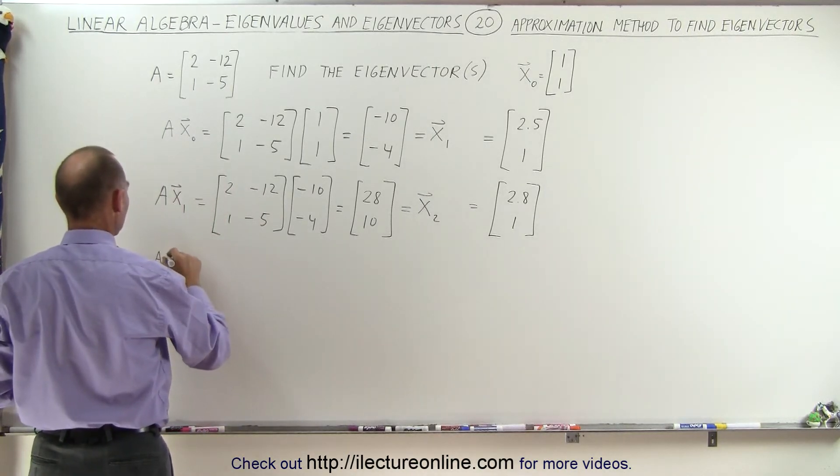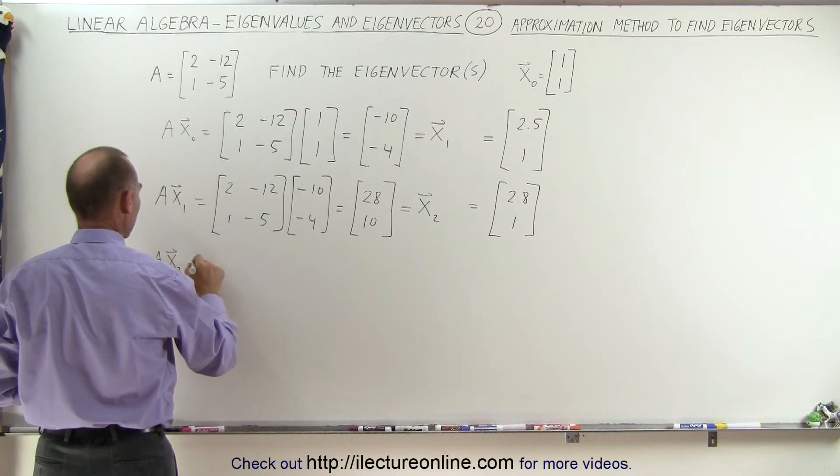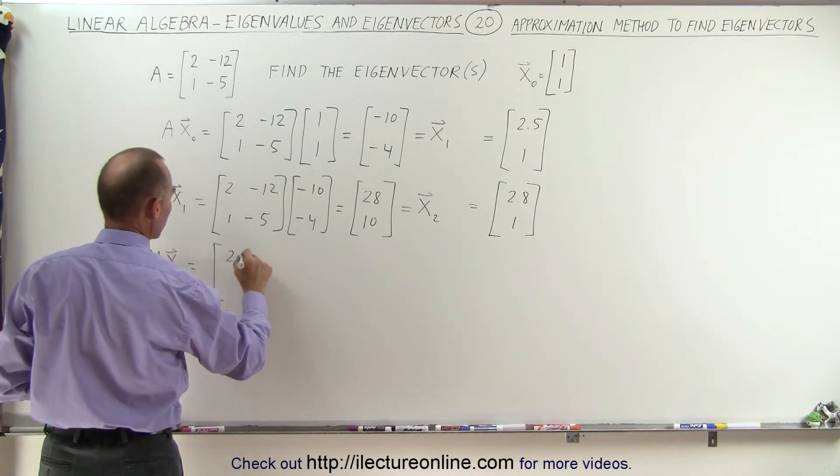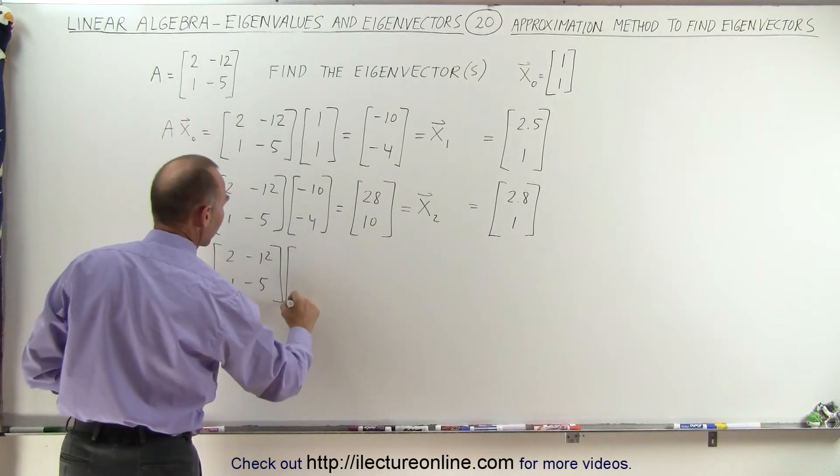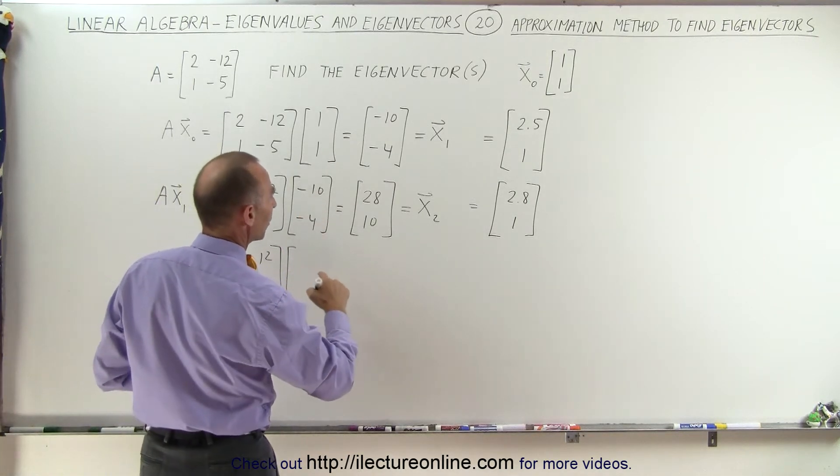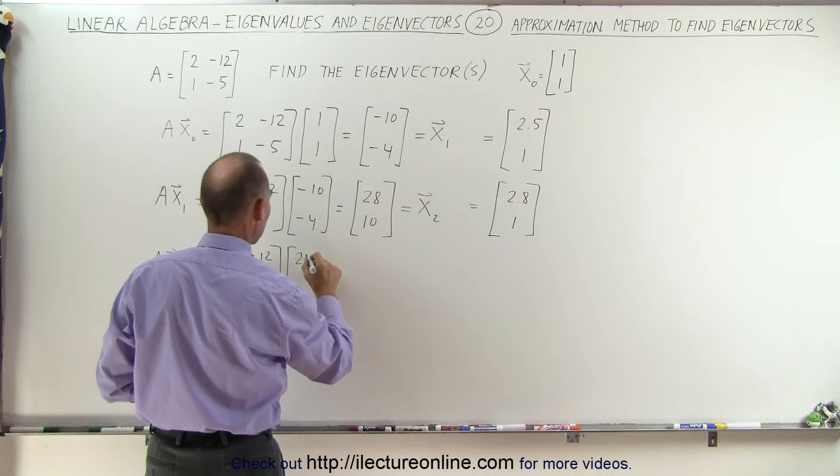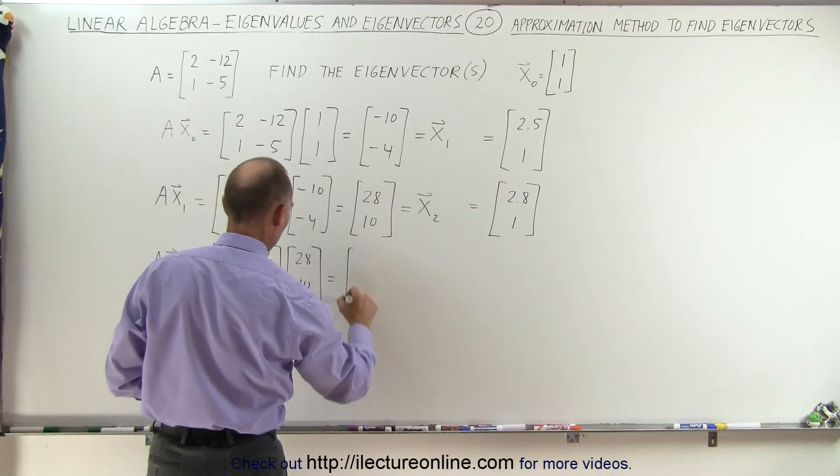I'm now going to multiply my A vector times x2. So that's equal to [2, -12; 1, -5] and multiply that times 28 and 10, which is equal to.